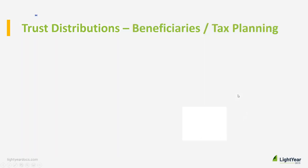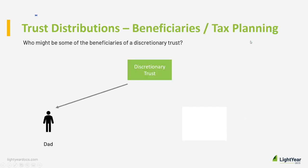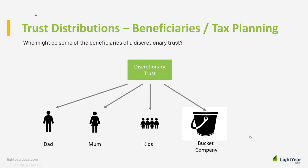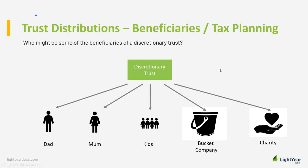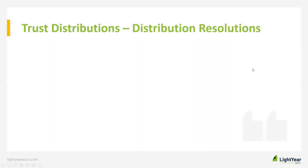In a family trust example, you might have mum and dad as named primary beneficiaries, the kids captured through secondary or general beneficiaries, along with grandchildren, a bucket company captured under related entities, and possibly a charity — either named specifically or captured under general or secondary beneficiaries as a charitable organisation. Default beneficiaries are entitled to receive any income where a valid distribution has not been made by the trustee.